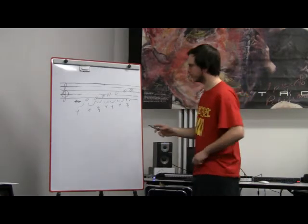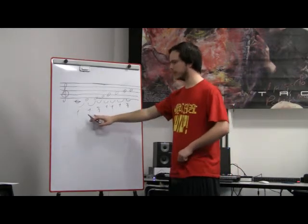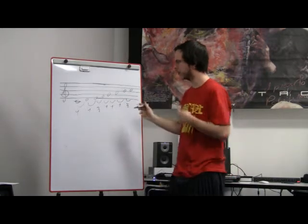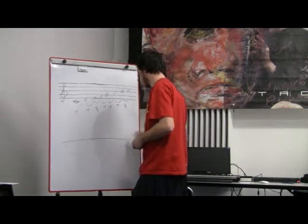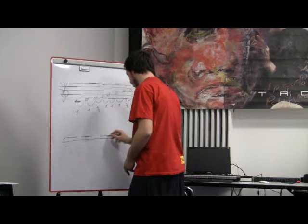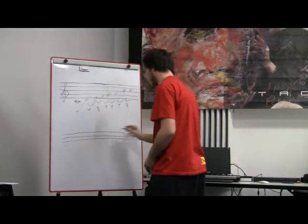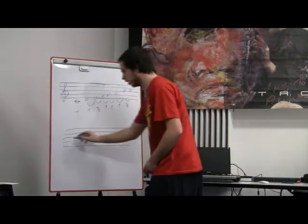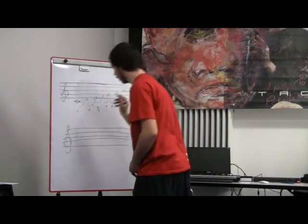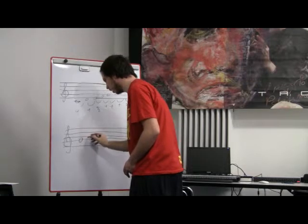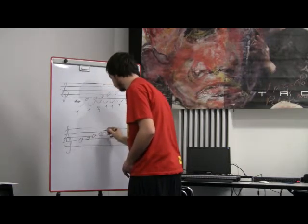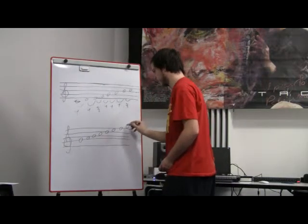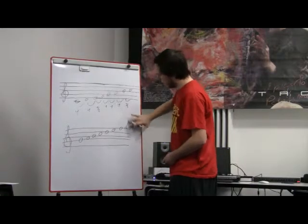If we decided to apply this sequence of intervals to the fifth grade, to the scale starting by the fifth grade, so let's see this scale. The fifth grade is the G, so we start with the G, then A, B, C, D, E, and then F, and then G.